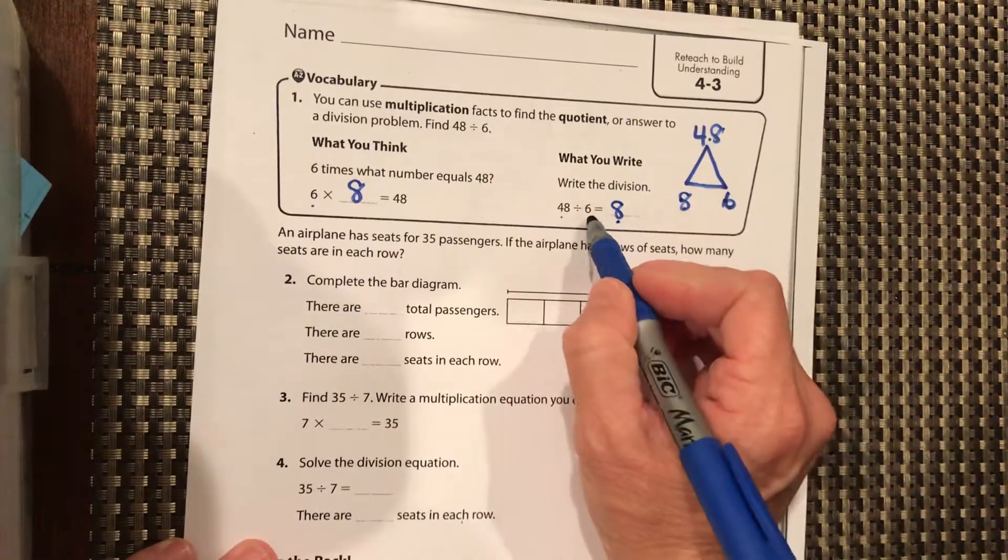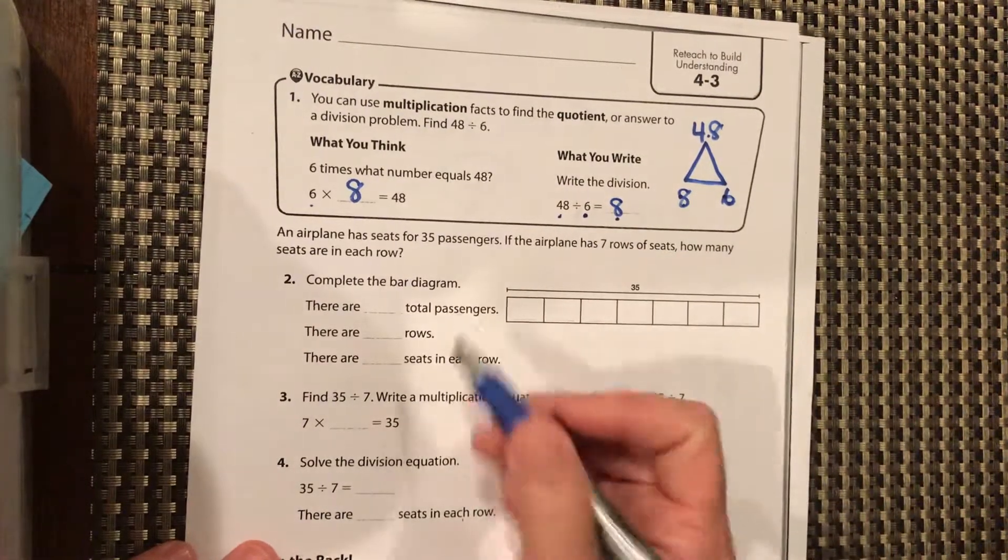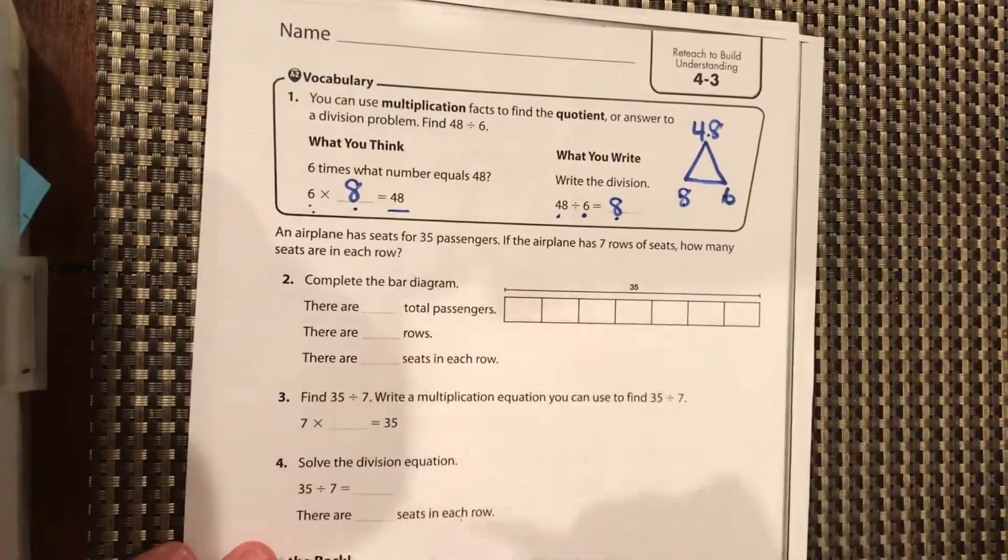And then you need to be able to check. 8 times 6 is 48. Okay, remember our little poem, 6 times 8, don't be late, leaving from gate, 48.